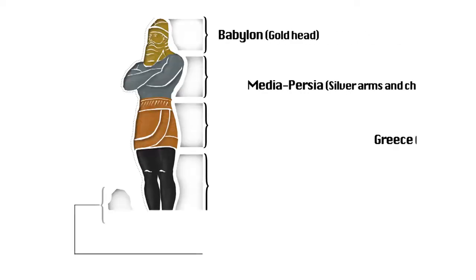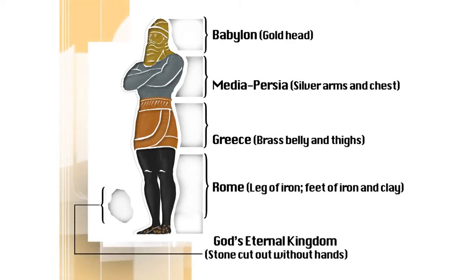Now, for centuries this dream has been interpreted and understood as follows: Babylon, the gold head; Medo-Persia, the silver arms and chest; Greece, the belly and brass thighs; Rome, the legs of iron and iron and clay; and then finally, God's eternal kingdom, the stone cut out without hands. This is not just an SDA interpretation — far from it. Millions of Christians and Jews have interpreted this chapter this way for centuries.